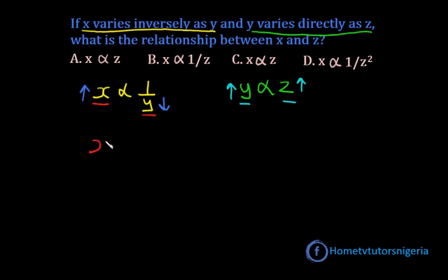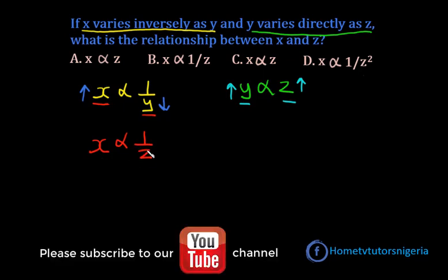So we can see that the relationship that is there between X and Y could also be translated to the relationship that is there between X and Z, which is X is inversely as Z.